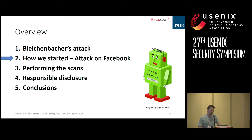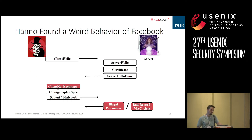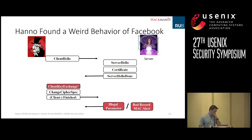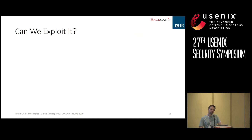About one year ago, Hanno approached me and said that he had performed some initial scans of several hosts and found a weird behavior of the Facebook server. Instead of responding with general alert messages, the server responded with different alerts depending on the client key exchange message — specifically, illegal parameter alert or bad record alert. We analyzed it, found it was really a problem, and asked ourselves: is it exploitable?